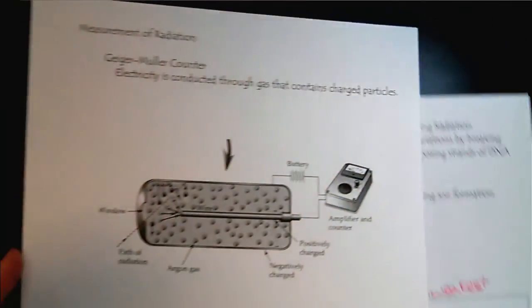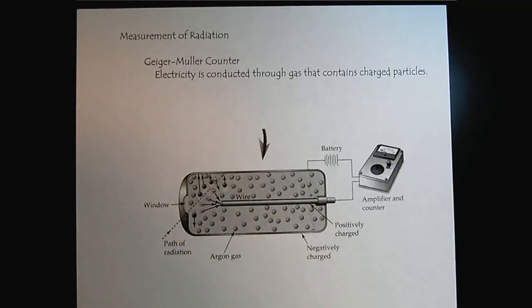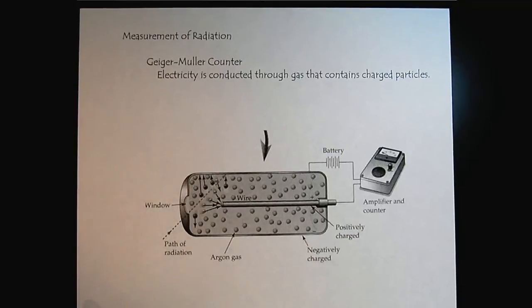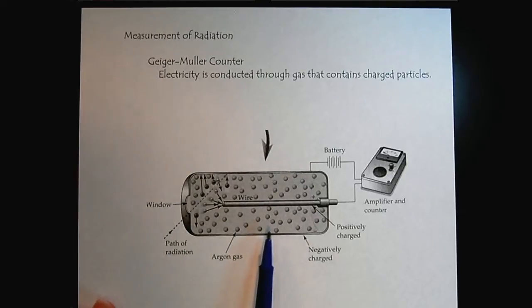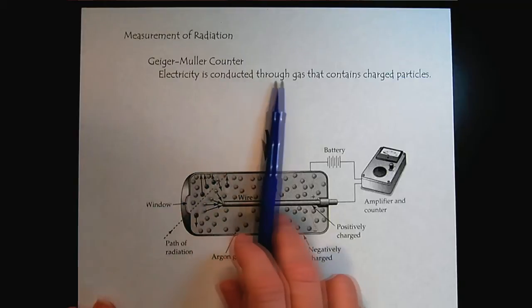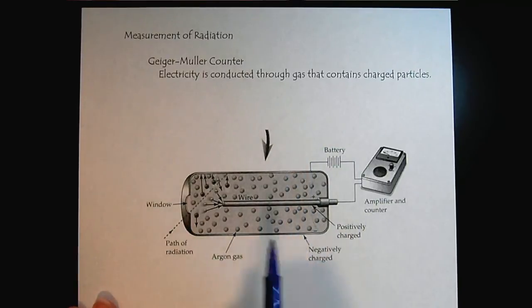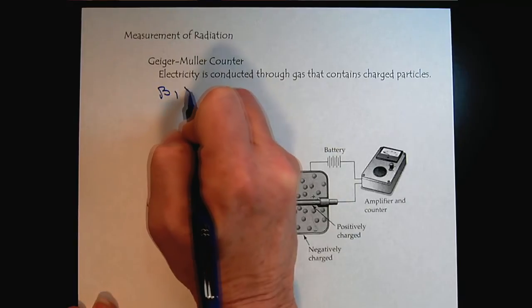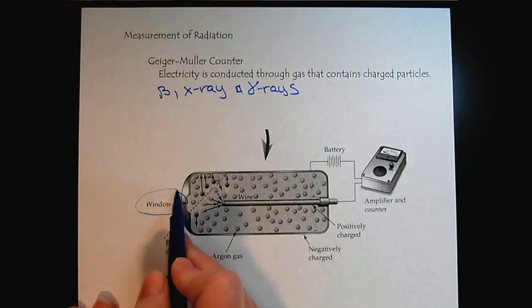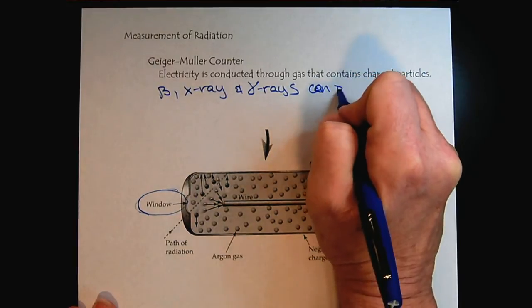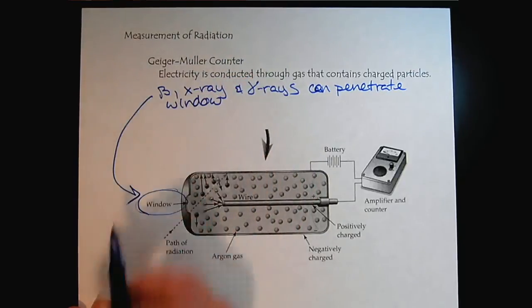Now let's look at how we measure radiation. I think we've all heard of the Geiger counter, officially called the Geiger-Mueller counter. Basically this is similar to solution chemistry, except now our solvent is the air instead of water or a liquid. Electricity is conducted through gas that contains charged particles. Remember that we call this ionizing radiation. So the beta, x-ray and gamma rays can penetrate this window.